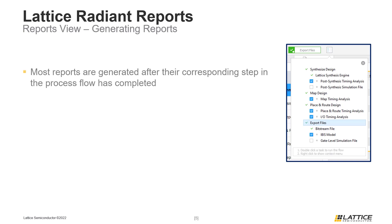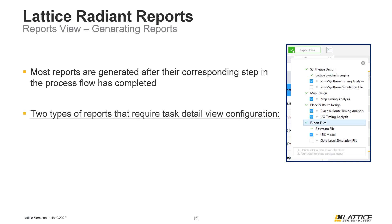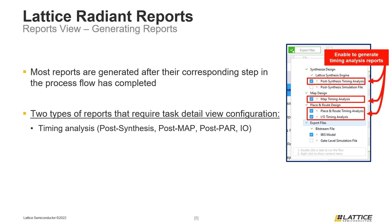Although many reports are generated by default, some reports require additional configuration in Radiant's Task Detail View in order to be generated. The first types are timing analysis reports. As seen from the figure on the slide, the timing analysis options must be enabled for each step of the project flow in order to generate a timing analysis report for that stage. By default, not all timing reports are enabled in Radiant's Task Detail View, so users should know which reports they want to generate before running the project flow.